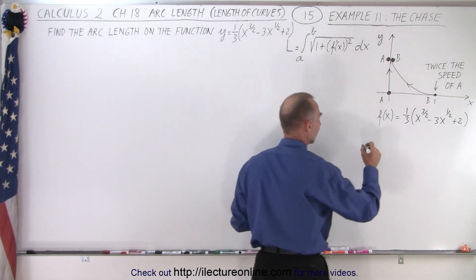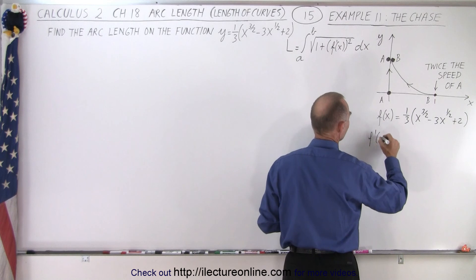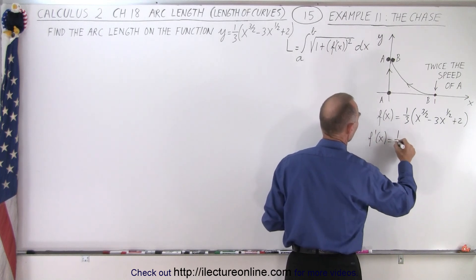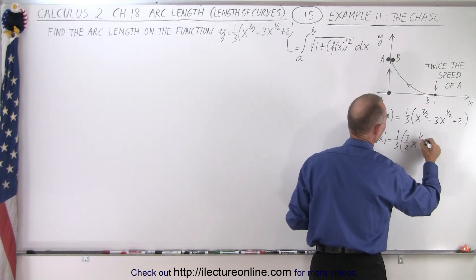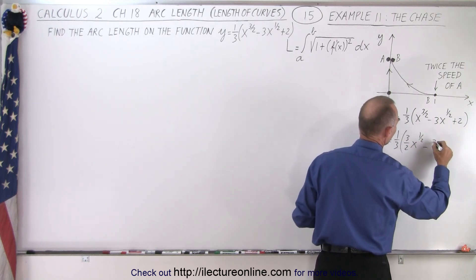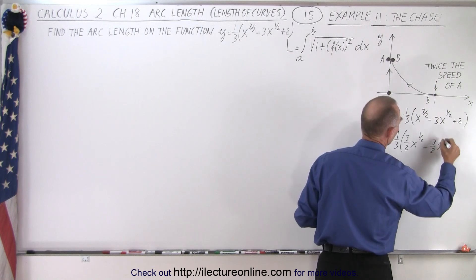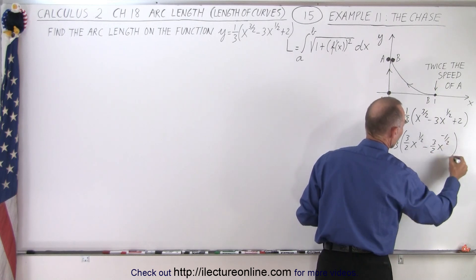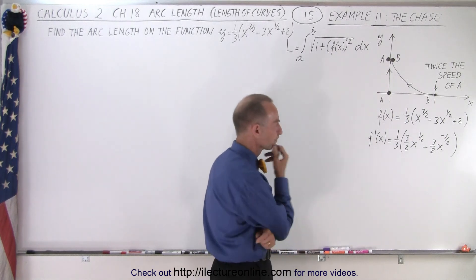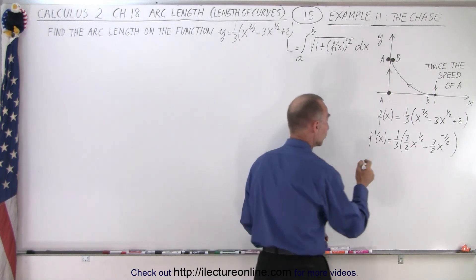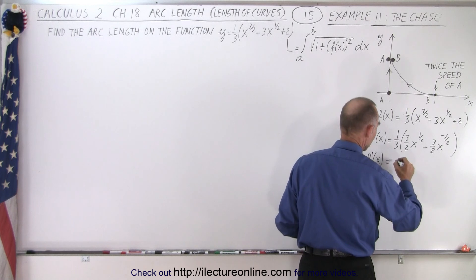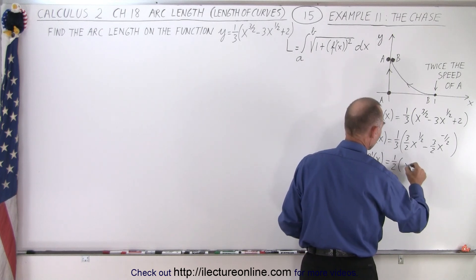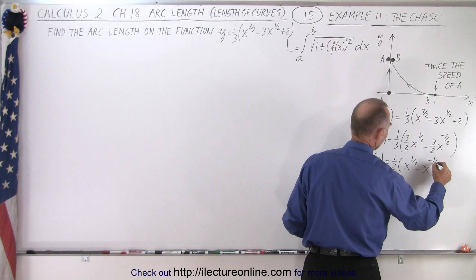So we need to take the derivative of that. So we have f prime of x is equal to one-third times three-halves x to the one-half power minus three times one-half, which is three over two x to the minus one-half. And of course, the derivative of the constant is zero. Looks like we can factor out the three-halves, which means that f prime of x is equal to, the three's will cancel out, so we end up with one-half times x to the one-half minus x to the minus one-half.